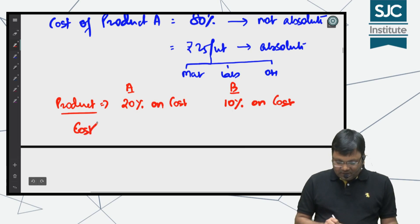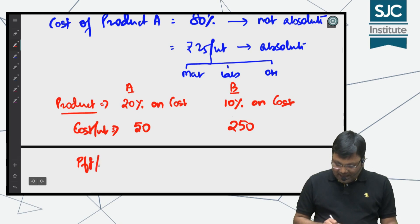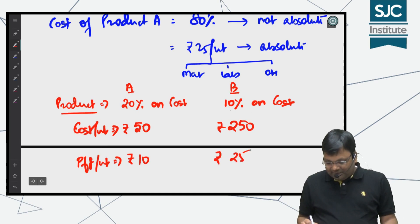Cost per unit of Product A is 50 rupees, whereas cost per unit of Product B is 250 rupees. So the profit in absolute terms for A is just 10 rupees, and for B the profit in absolute form is 25 rupees.